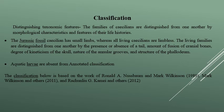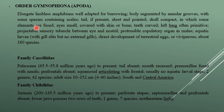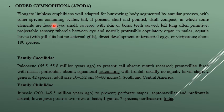Order Gymnophiona means the group without limbs. The body is segmented with annular grooves, annular holes, and some species have scales in the skin. The tail is present, short and thick. Eyes may be hidden under skin or bone. Teeth are present. The lungs are often primitive. The body is worm-like and highly specialized.